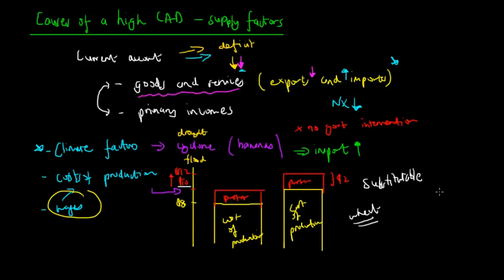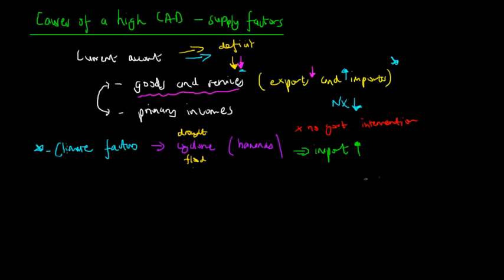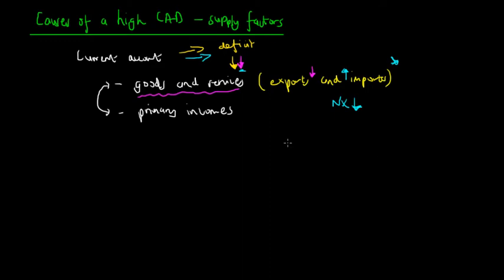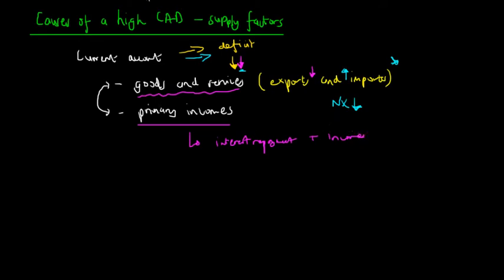This doesn't really apply to Australia at the moment because we have very strong terms of trade — if you want to brush up on that, refer to the terms of trade lecture. Our terms of trade is very strong due to high demand for our natural minerals from China. Yet we still have a current account deficit. This is primarily due to our primary incomes balance, which includes interest repayments and incomes, and this is a major cause of the high CAD we've experienced in recent years.